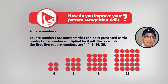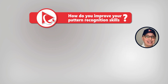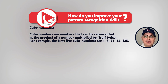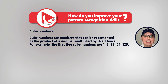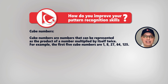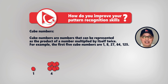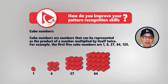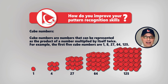And last but not least on my list are cube numbers. Cube numbers are numbers that can be represented as a product of a number multiplied by itself twice. For example, the first five cube numbers are 1, 8, 27, 64, and 125.